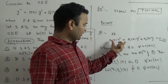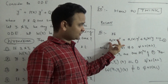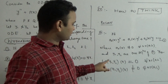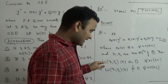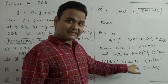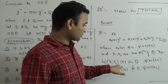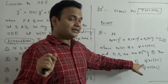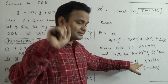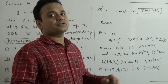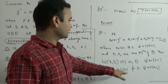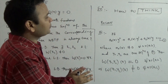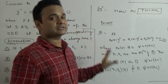...if you have two solutions of this differential equation and you look at the Wronskian of those solutions, then either the Wronskian is identically zero for all x, or it is never going to be zero. This is the theorem for the Wronskian of solutions of a differential equation.